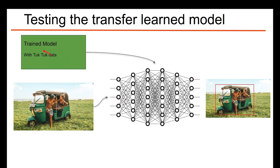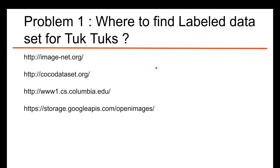This is the objective. After we get the trained model, we can feed in an image and the system should be able to identify the tuk-tuk. The first problem we face is finding labeled data images — a labeled dataset for tuk-tuks.